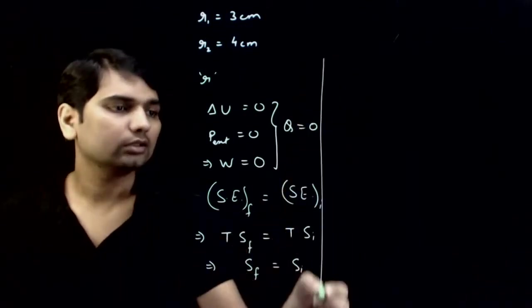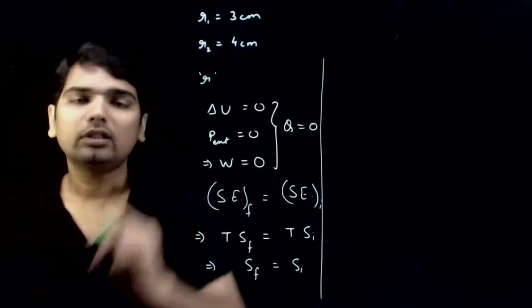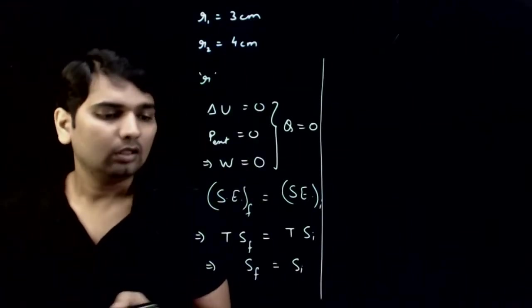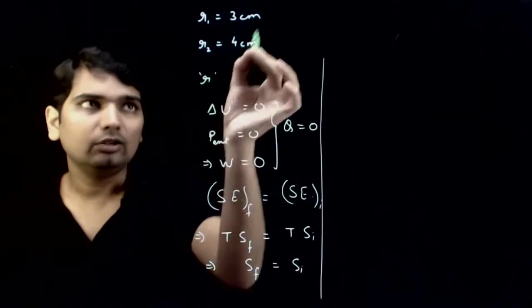Now, you have two bubbles initially and finally one bubble. Final surface area equals both initial surface areas.